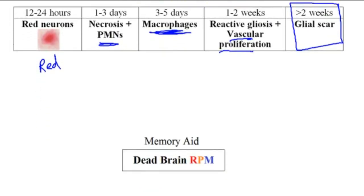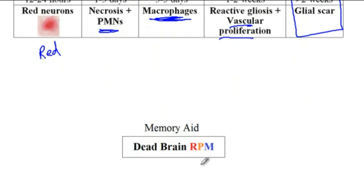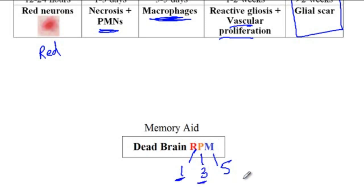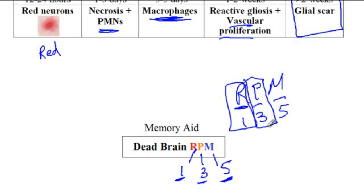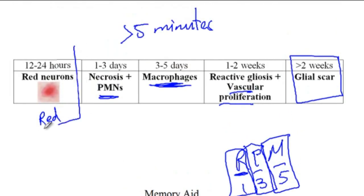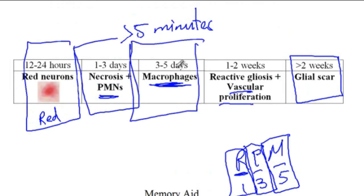A memory aid to remember the order and timing of histological changes in dead neurons is 'Dead Brain RPM.' RPM stands for Red neurons, PMNs, and Macrophages. Assign odd numbers in increasing order: one, three, and five. Red neurons up to day one, PMNs or neutrophils up to day three, and macrophages up to day five.